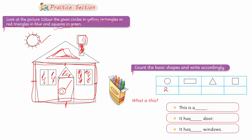Count the basic shapes and write accordingly. Looking at rectangles — the pages, the windows: this window is 6, so how many rectangles are there? Six, and adding another gives 7 rectangles. Triangles: this is 1 and this is 2, so 2 triangles. Squares: only one square.